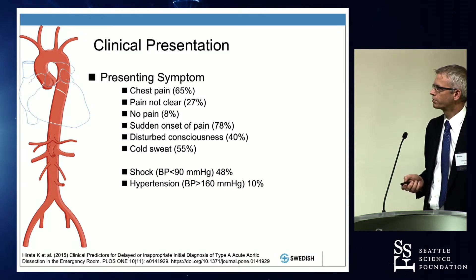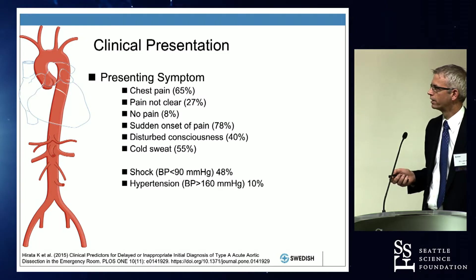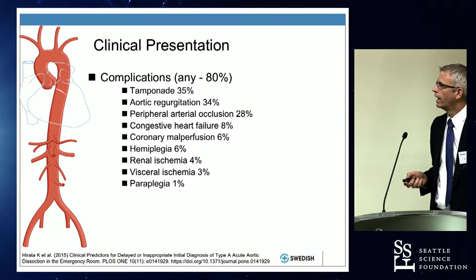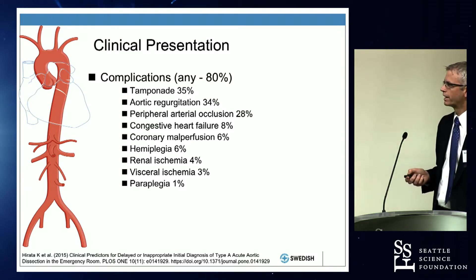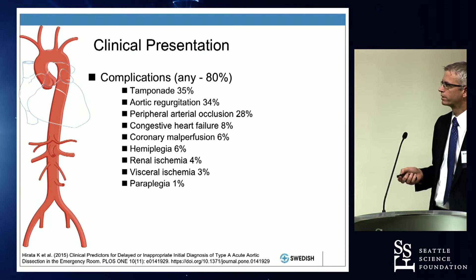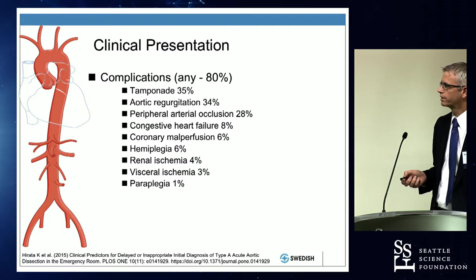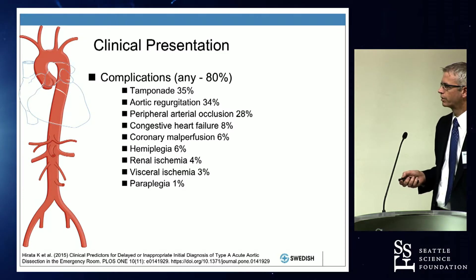65% of patients present with chest pain. Other patients present with pain but it's not clear where it is, and 8% have no pain at all. Many have disturbed consciousness, sometimes syncope. They can present with shock or with hypertension. Complications include tamponade from rupture, aortic valve insufficiency, occlusion of peripheral arteries, congestive heart failure from coronary artery occlusion, hemiplegia, renal ischemia, visceral ischemia leading to abdominal pain, and paraplegia.